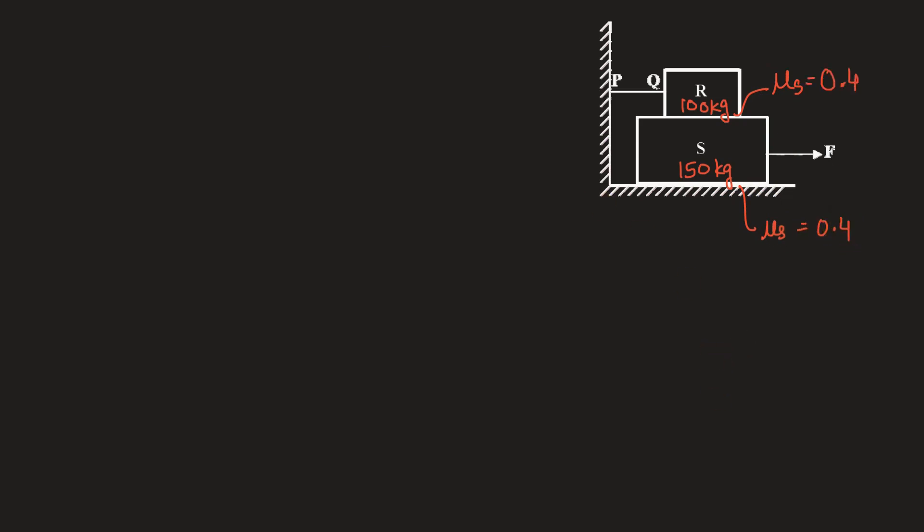So let's draw the free body diagram first. Weight of this block which will act downwards is nothing but 100 into g, acceleration due to gravity. So we have weight of this block be WR. Weight of block S is WS. All the bodies that are in contact with each other are going to offer normal reaction. So the normal reaction that this block offers to the smaller one will be numerically equal to WR.